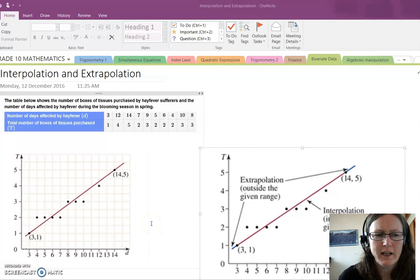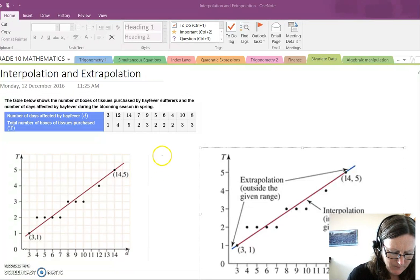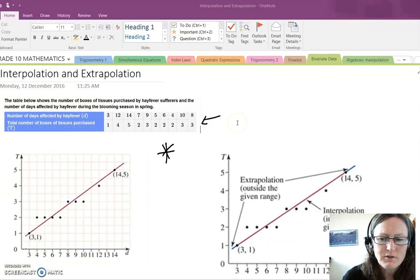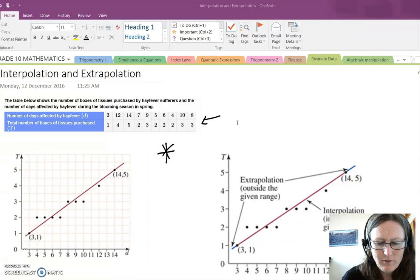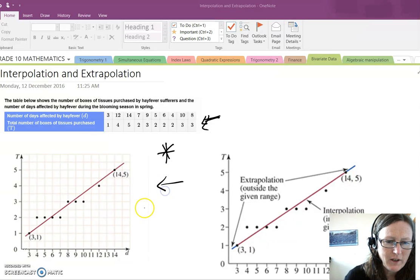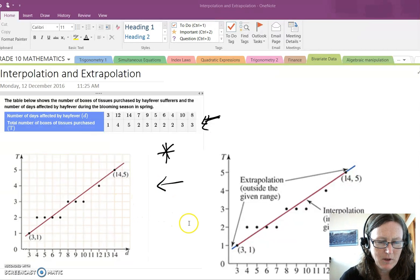Okay, I'm now wanting to explain interpolation and extrapolation. What you can see here is worked example 6. In worked example 6, there is a table which shows the number of boxes of tissues purchased by hay fever sufferers and the number of days affected by hay fever during the blooming season in spring. This information from this table has been put into a scatterplot below and a line of best fit has been drawn.